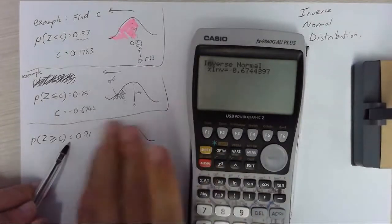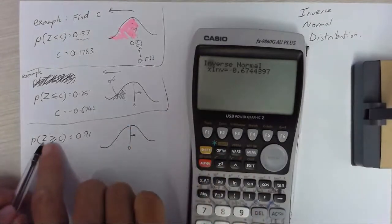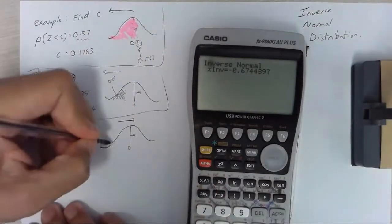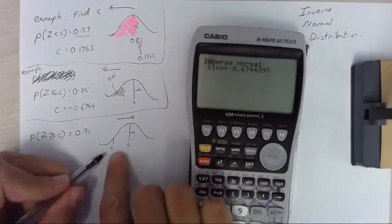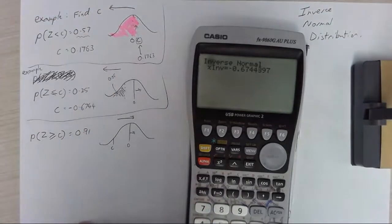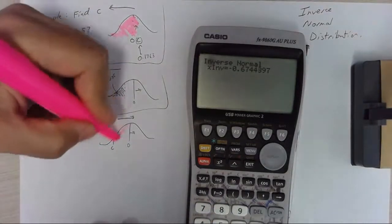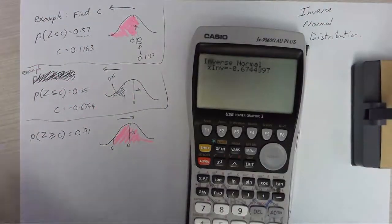So it's going to be most of the normal distribution but z is greater than. So this time we're moving in this direction, the c value must be like there somewhere and we're trying to find all of that stuff.